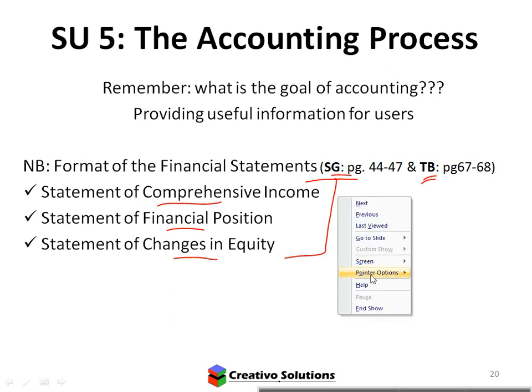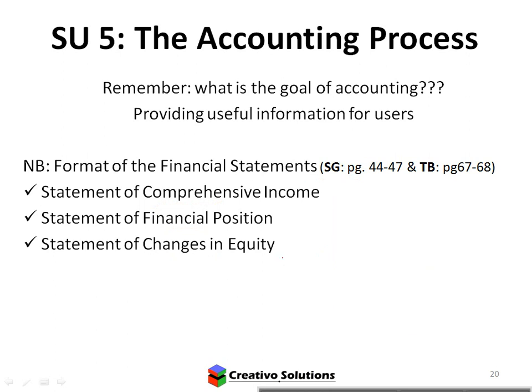What I do want to discuss here is some revision. The statement of comprehensive income — it's also called profit and loss. What do I show in my profit and loss? Income and expenses. Notice those are two of the accounting elements. So if I'm going to draw up a statement of comprehensive income, I'm going to show income and expenses.